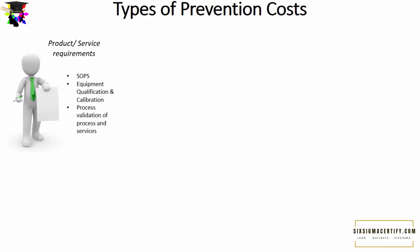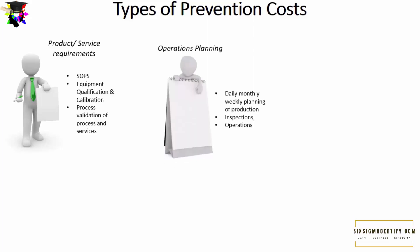Another prevention cost is process validation of processes and services. Getting a good batch of product only once does not mean the process is validated — it should repeatedly give the desired result. Consistent, reproducible outcomes are required for a process to be considered validated.